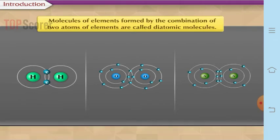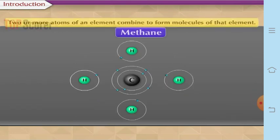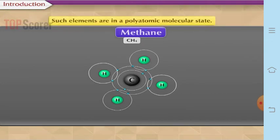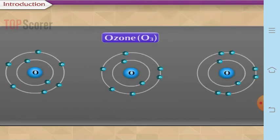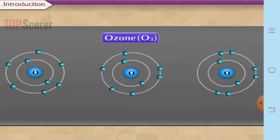Now let us see a little further about the different types of molecules of elements as well as compounds. In the case of methane, it is a compound and it is a polyatomic molecule — because it comprises more than two atoms. Such molecules formed from more than two atoms are called polyatomic. Now let us see in the case of an element where more than two atoms combine to form a molecule. Here there is an example of ozone. Ozone exists in the form of O3, meaning three atoms combine to form one molecule of ozone. Such a molecule is called a triatomic molecule.